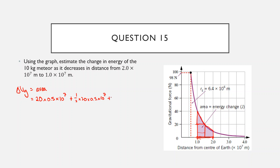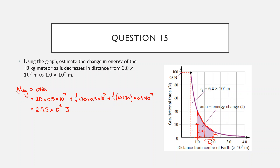And the area of this trapezium — if we consider a and b as the parallel sides and h as the width — we're going to have half times (a + b) times h. Let's say a is 10, and b is 20 (the height of the rectangle), times h which is 0.5×10⁷. Put all that into a calculator — this is just an approximation — and I get around 2.25×10⁸ joules. That's how much our energy has changed.